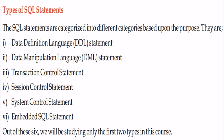What are the types of SQL statements? SQL statements are categorized by the work they do. They include: DDL — Data Definition Language, DML — Data Manipulation Language, Transaction Control statements, Session controlling, System control, and Embedded SQL statements, which allow SQL to be embedded within C or C++ programs.